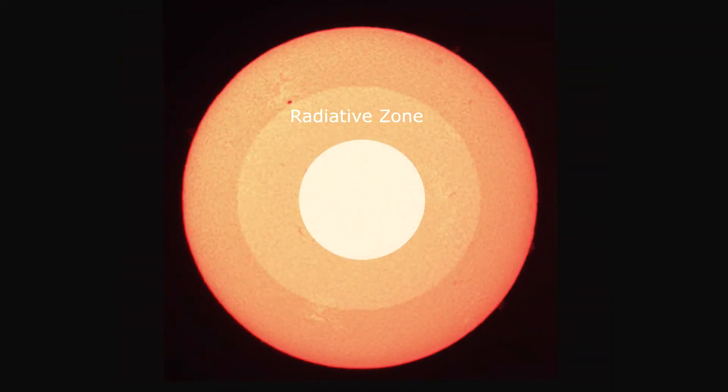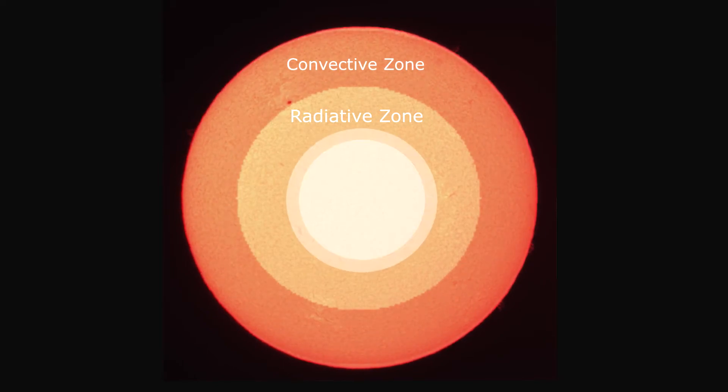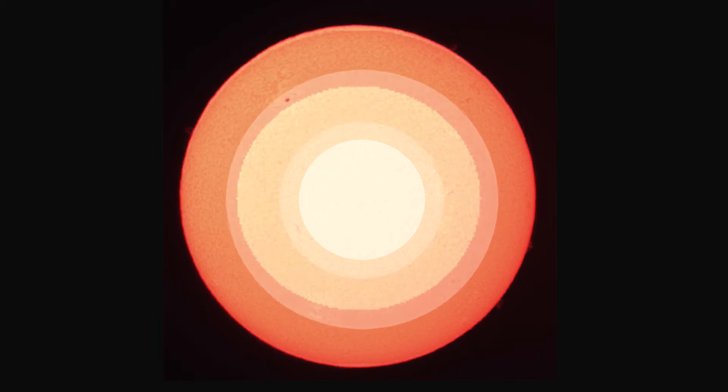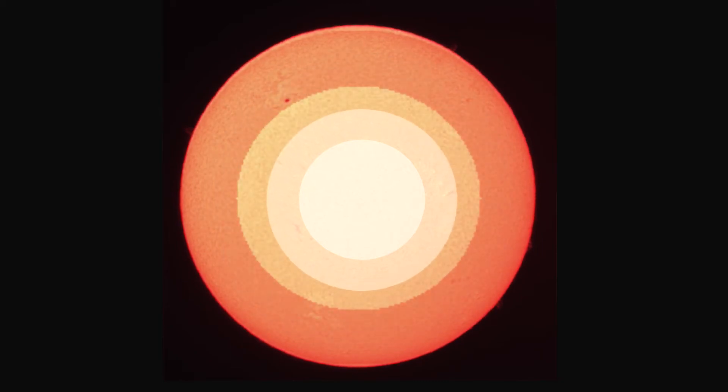The radiative and convective zones occupy the area in between the core and the surface. Heat rises from the core through the radiative zone, transferring it upwards, then through the convective zone, by columns of surging hot gases towards the surface.